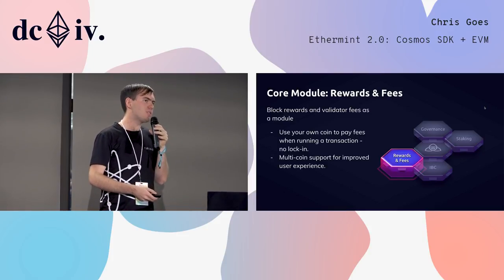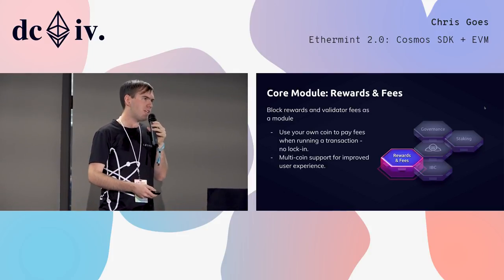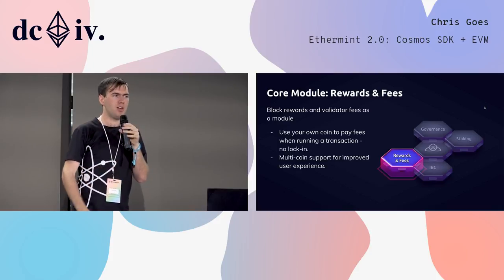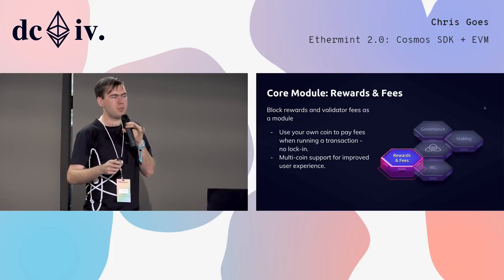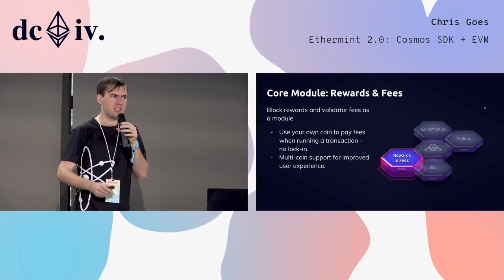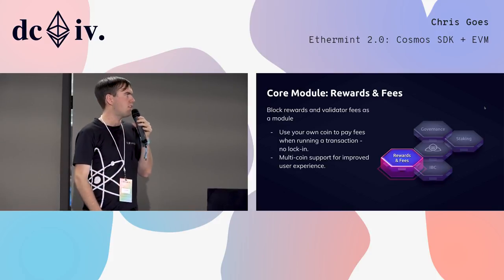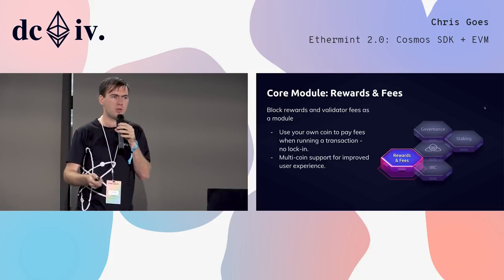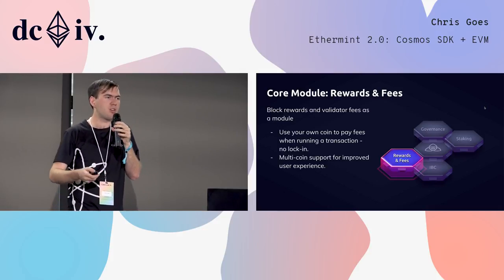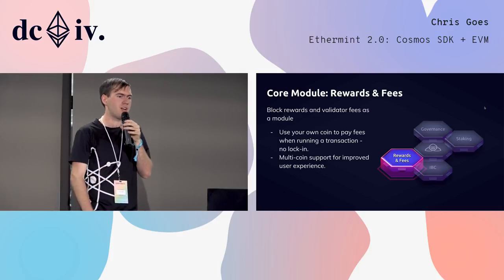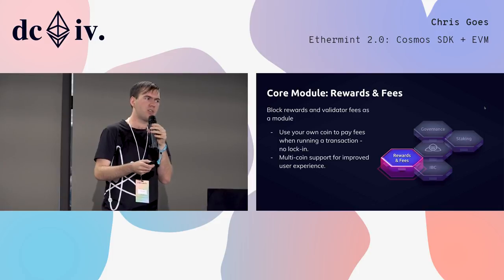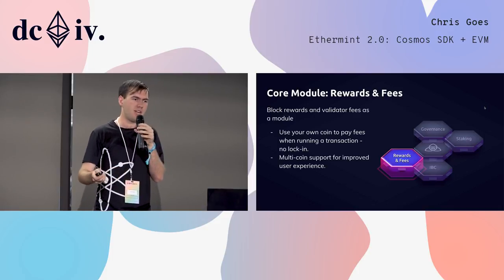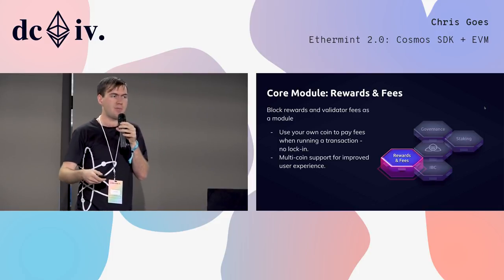We think the economic model of proof-of-stake may be a little different. For example, for the Cosmos Hub, we plan to accept transactions — we plan to encourage the validator set of the Cosmos Hub to accept transactions which pay fees in lots of different denominations. They don't need to be atoms.